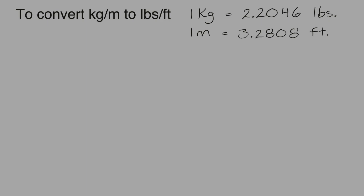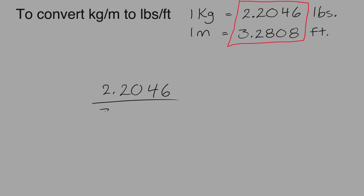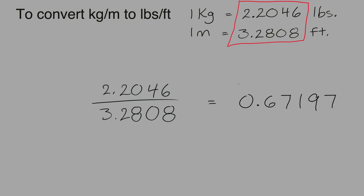I'll show you another way this can be done — a second method to do the exact same thing. You take your conversion factors and divide them: 2.2046 divided by 3.2808 gives you an answer of 0.67197. This number can then be used as a single conversion factor.